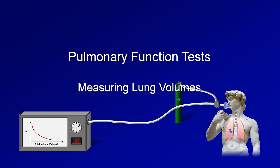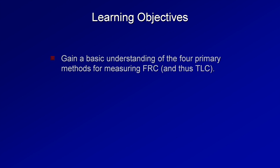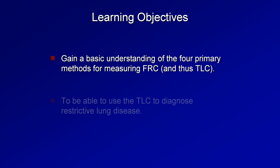This is lesson 3 in this series on pulmonary function tests, and the topic is measuring lung volumes. The learning objectives are to gain a basic understanding of the four primary methods for measuring the functional residual capacity and thus total lung capacity, and to be able to use the total lung capacity to diagnose restrictive lung disease.